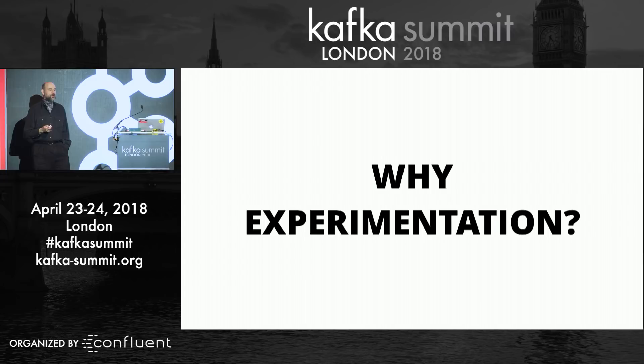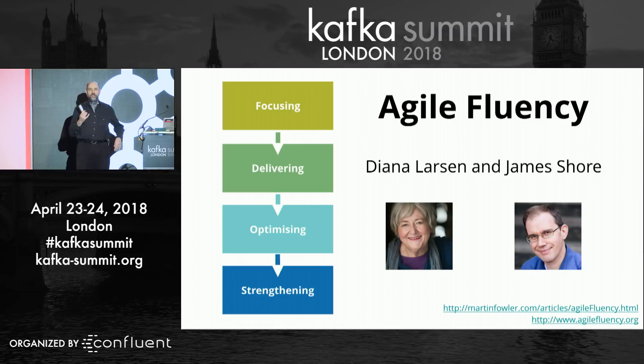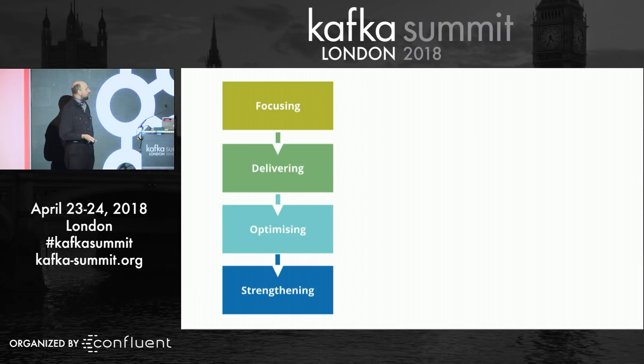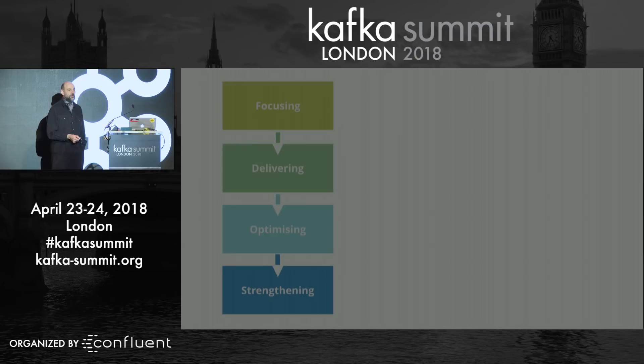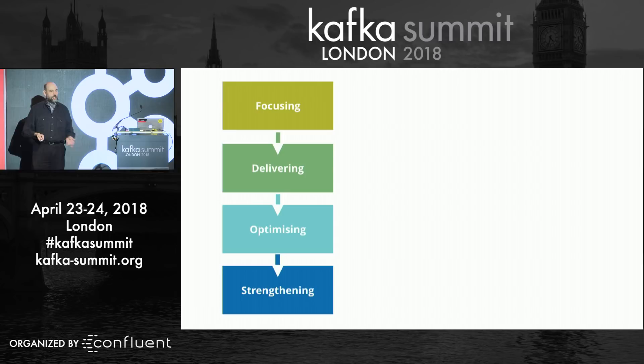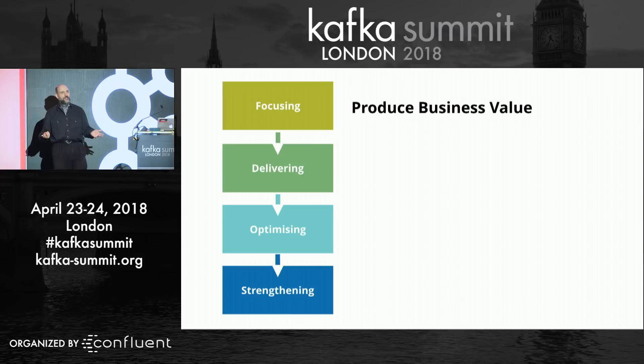Agile software development works in a number of different ways. A model I found very handy is called the agile fluency model, developed by a couple of people talking about the way they saw different teams work. The basic idea is that there's a first level called focusing — all about changing the management style of a team so that instead of measuring how much work is ticked off, you begin to think about how to produce business value. That's the management style of agile: iterations and that kind of thing.